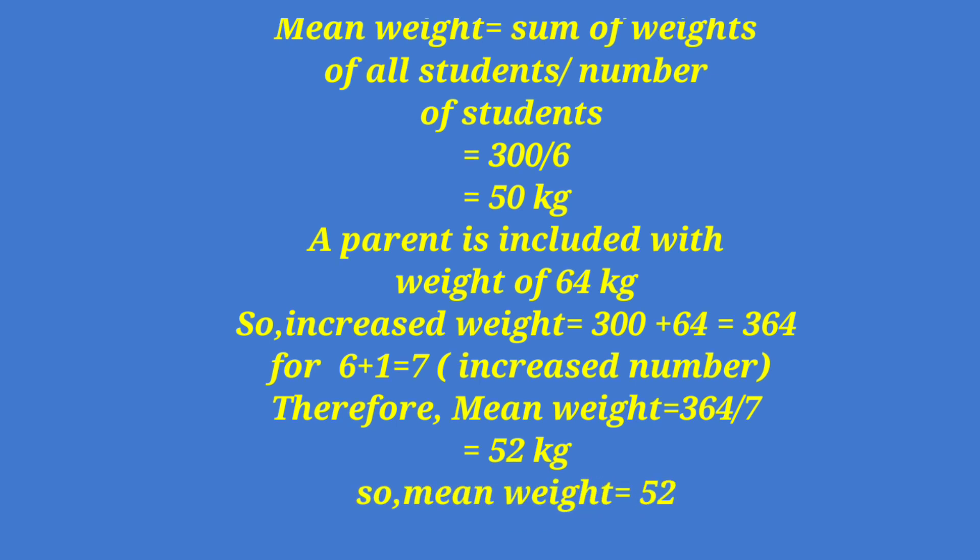Now a parent is included with weight of 64 kg. So increased weight equals 300 plus 64, which equals 364. There are six students already and one parent, so 6 plus 1 equals 7, the increased number. Therefore, mean weight is 364 divided by 7.